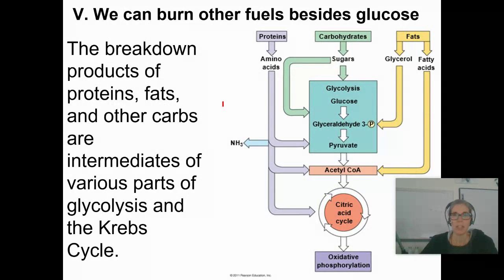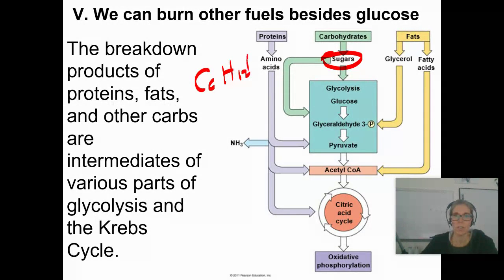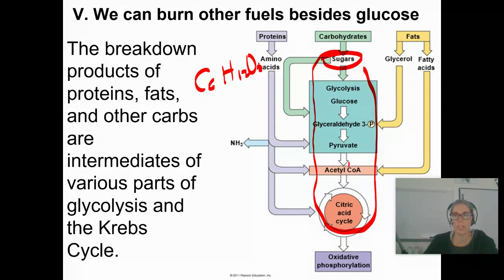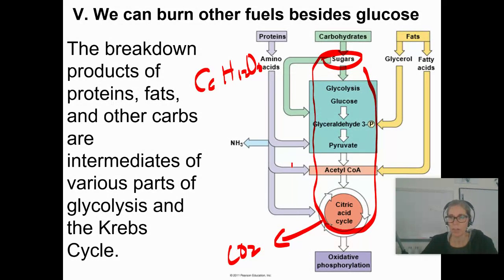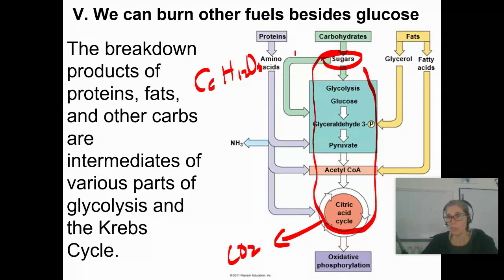Welcome to AP Biology. We've been talking about cellular respiration in this unit. In cellular respiration, we always start with sugar, C6H12O6, and then we go through glycolysis, pre-Krebs, and the Krebs cycle. We release some carbon dioxide, and we make a whole bunch of carrier molecules — the NADH and the FADH2. But the question is: can you eat other stuff and use other stuff for energy?